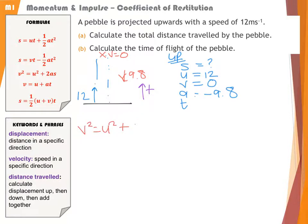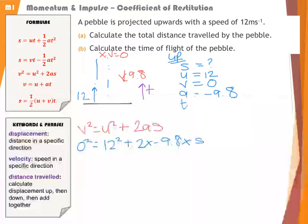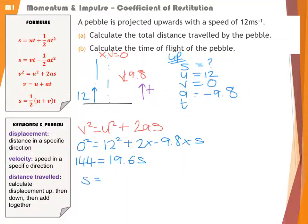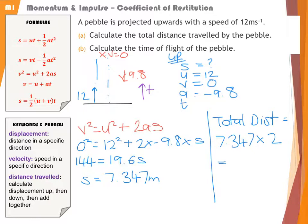V² = U² + 2AS. We've got 0² = 12² + 2 × (-9.8) × S. Rearranging: 144 = 19.6S. Dividing by 19.6 gives S = 7.347 metres to four significant figures as an in-between stage. The total distance is the displacement up doubled, which is 14.7 metres to three significant figures.